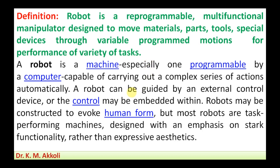A robot can also be explained as a machine, especially one programmable by computer, capable of carrying out a complex series of actions automatically. A robot can be guided by an external control device, or the control may be embedded within the robot itself, like a humanoid robot where the control is present within only.